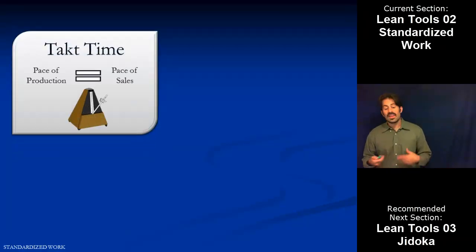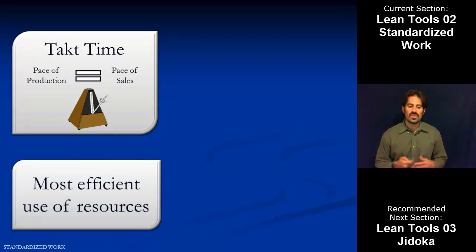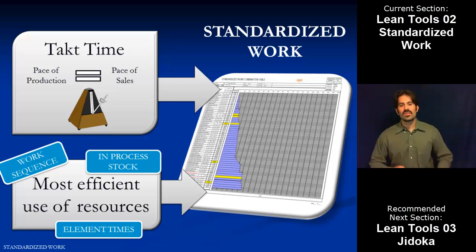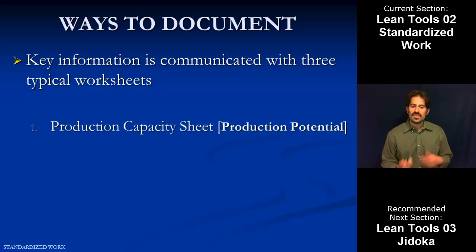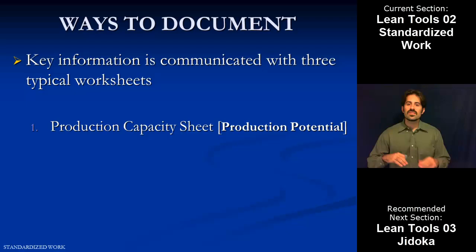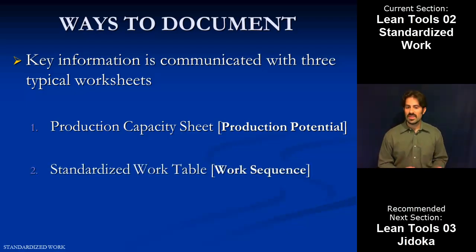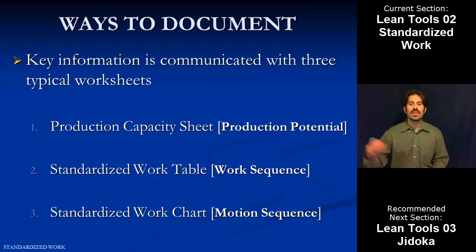When we look at takt time and standardized work: if takt time is the metronome that sets the pace of production equal to the pace of sales, and we combine that with the most efficient use of resources — the work sequence, in-process stock, and element times — we put those two things together to create our standardized work. There are a couple different ways to document it formally. The first is the production capacity sheet, which shows production potential; then the standardized work table, which shows the sequence; and then the standardized work chart, which shows the operator motion as they go through the steps in their work process.